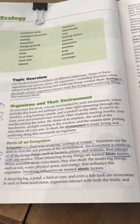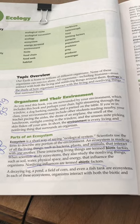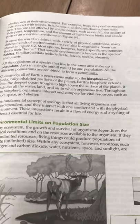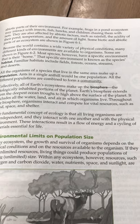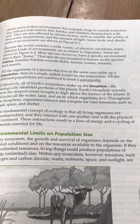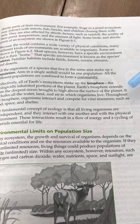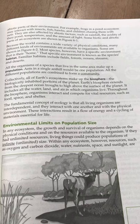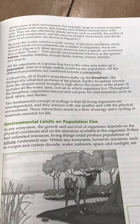A decaying log, a pond, a field of corn, or even a fish tank, are ecosystems. In each of these ecosystems, organisms interact with both the biotic and abiotic parts of the environment. For example, frogs in a pond ecosystem may interact with insects, fish, hawks, and children chasing them with nets. They are also affected by abiotic factors, such as rainfall and acidity of their pond, temperature, and the amount of light. Some biotic and abiotic parts of an ecosystem are shown in Figure 6-1.